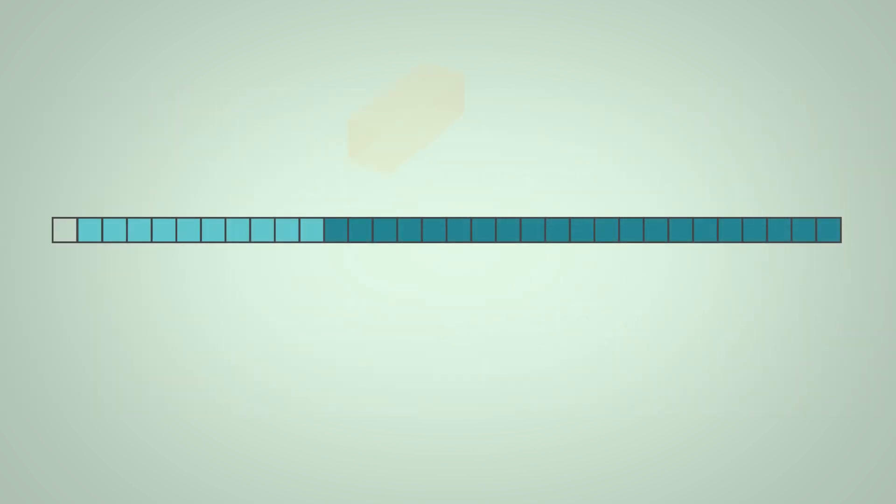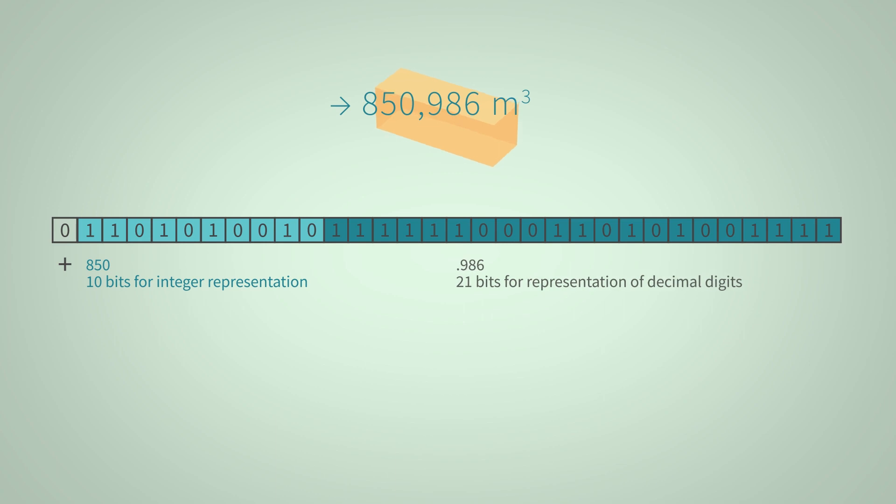We receive a binary representation for our cuboid with a size of 850.986 cubic meters as follows. The highest significant bit is 0 and hence is representing a positive sign. The next 10 bits represent the binary value before the decimal point necessary to encompass the value 850. The remaining 21 bits can now be used to represent the value after the decimal point, 0.986.